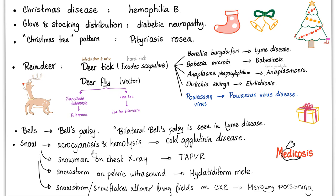Today we'll focus on snow. Acrocyanosis and hemolysis — this is called cold agglutinin disease. It happens especially if you are elderly and shoveling snow for a long period of time, not to mention frostbite of course. Snowman on chest x-ray — this is TAPVR, total anomalous pulmonary venous return. Snowstorm on pelvic ultrasound — this is a hydatidiform mole. Snowstorm or snowflakes all over the lung fields on x-ray — this was today's question, and the answer is mercury poisoning.